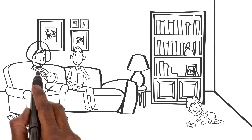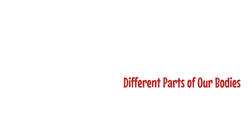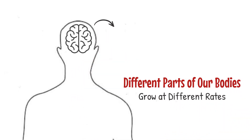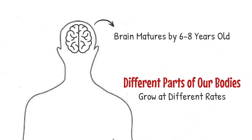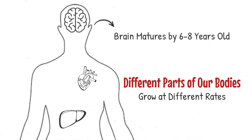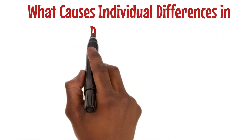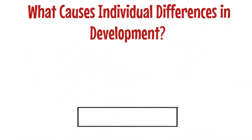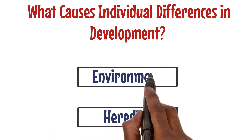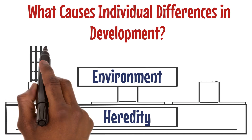Growth is predictable because children grow at steady rates, so we can predict their early development outcomes. Body parts develop at different rates — for example, the brain matures by six to eight years old, while the heart and liver grow around the same time. Individual differences in development arise from the interplay of heredity and environment, and it's challenging to separate their contributions.